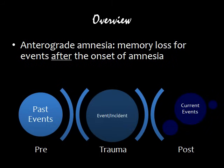Anterograde amnesia is described as memory loss for events after the onset of amnesia. In the diagram, the colour of the circles indicates the client's ability to recall information. In anterograde amnesia, the client is better able to recall past events — illustrated by a lighter circle — than current events, illustrated by a darker circle.